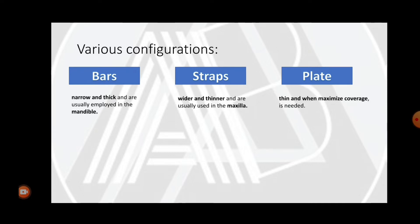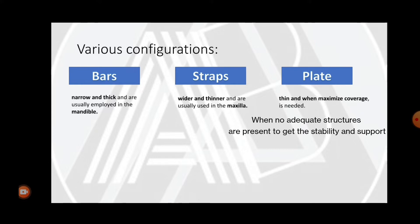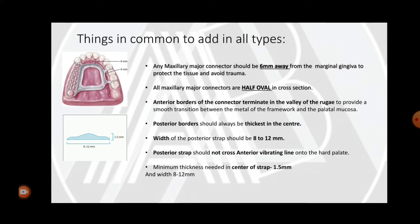There are various configurations available for the maxillary major connector: bars, straps, and plates — each with separate indications. Bars are usually narrow and thick, typically used in the mandible. Straps are wider and thinner, used in the maxillary arch. Plates are thin and used when maximum coverage is needed, such as when there are multiple missing teeth and inadequate teeth for support.